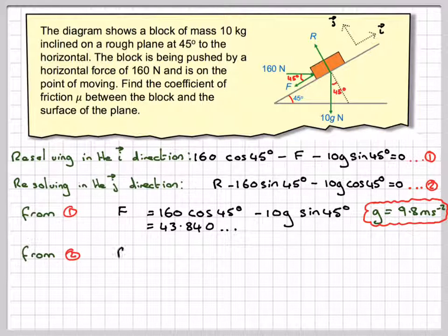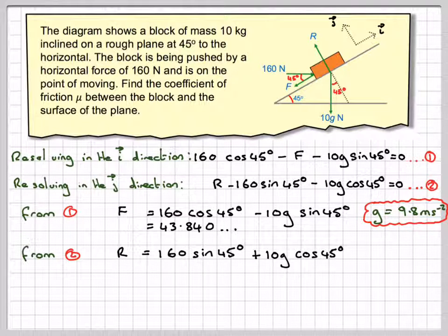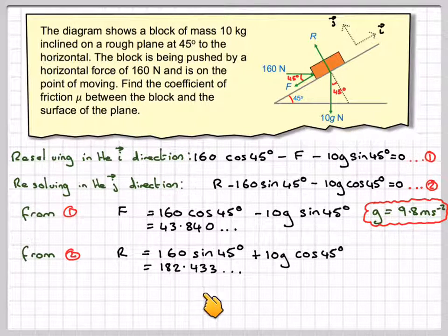And from equation 2, we're going to have R is 160 sin 45 plus 10g cos 45, which gives 182.433.